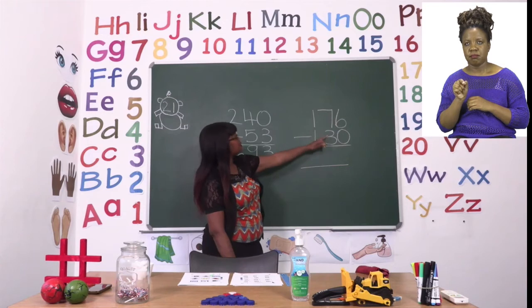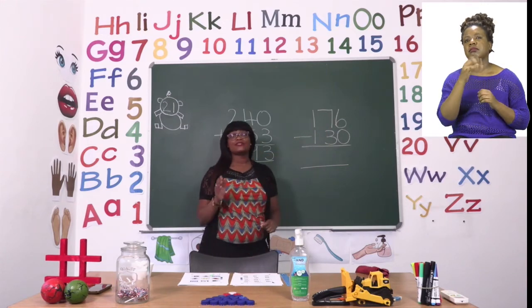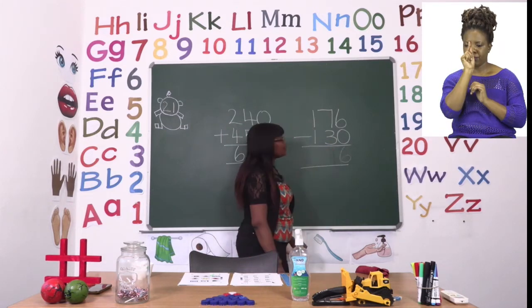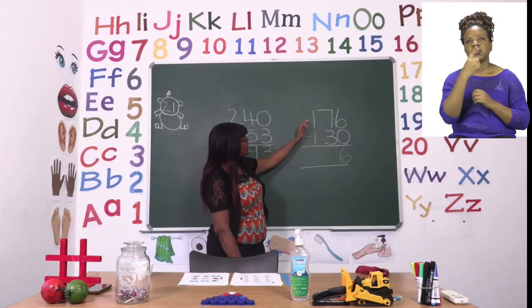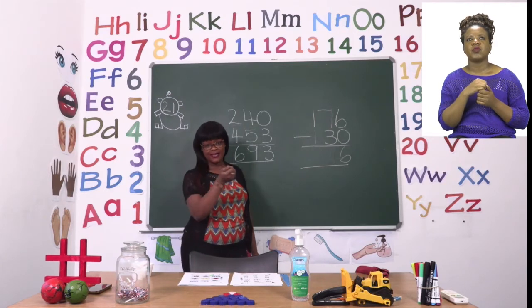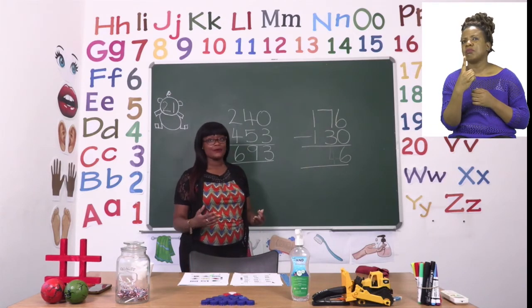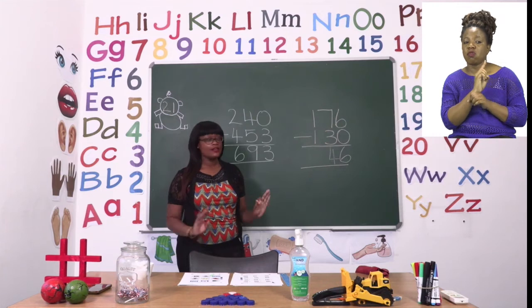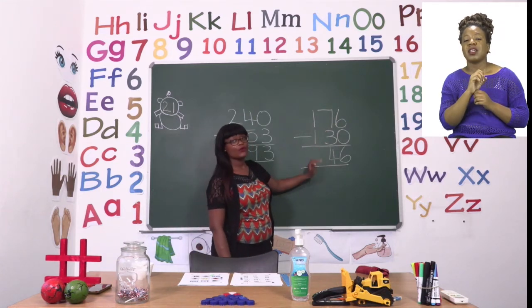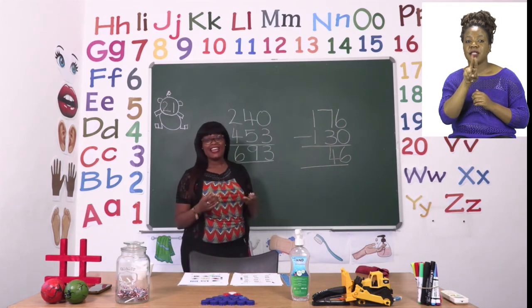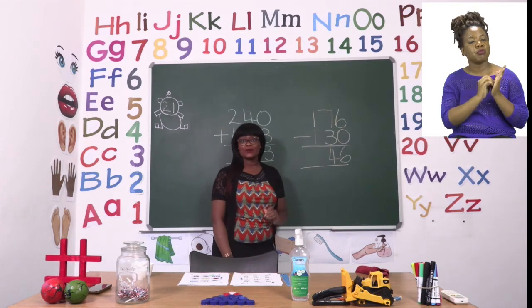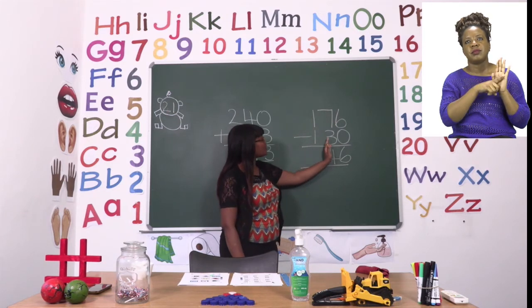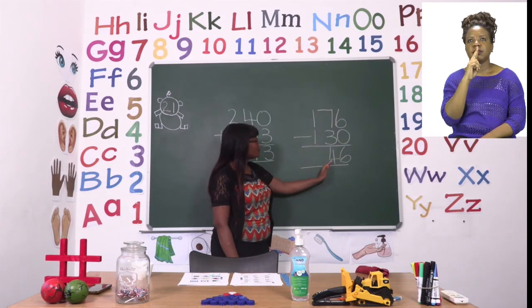And then we have 7 minus 3. So 7 minus 3 will give us 4. Then the last one that we have is 1 minus 1. Now if I have 1 thing and I take it away my answer is 0. But because this number is at the end of our number we do not put anything. So anytime our answer is 0 for the hundredth we do not add any 0. We leave it like that. So now our total says 176 minus 130 will give us 46.